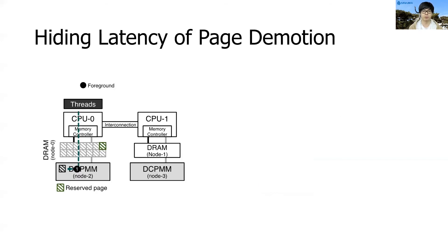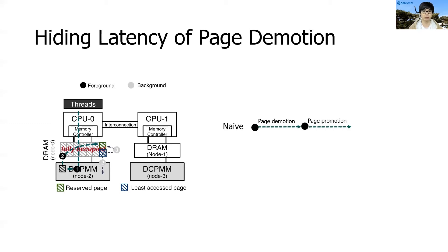In addition, we have a software optimization to hide the latency of demoting pages from upper-tier to lower-tier memory. By reserving a set of free pages in the upper-tier memory, we immediately serve the promotion request and the demotion is conducted in the background. Without such an optimization, the promotion can only start after completing the demotion. With this optimization, we can start the promotion as early as possible. For more detail about estimating the least accessed page and hiding the demotion latency, please see our paper.